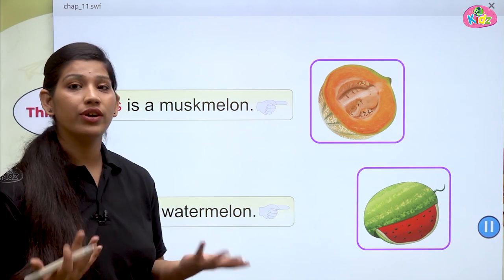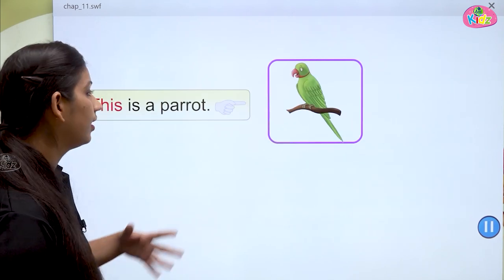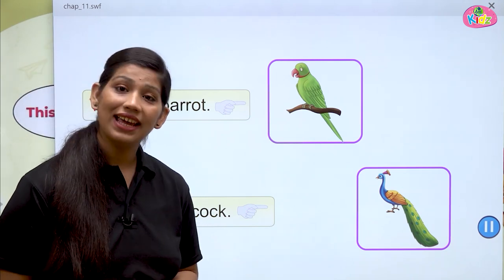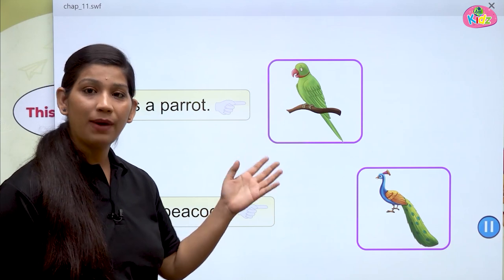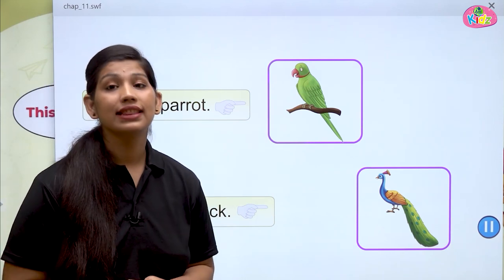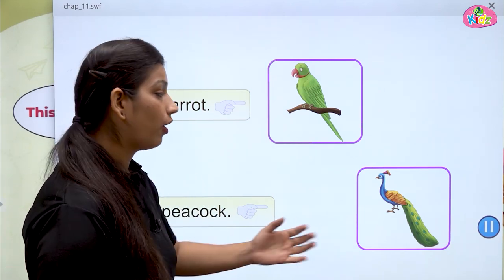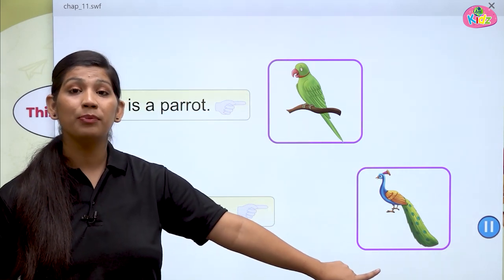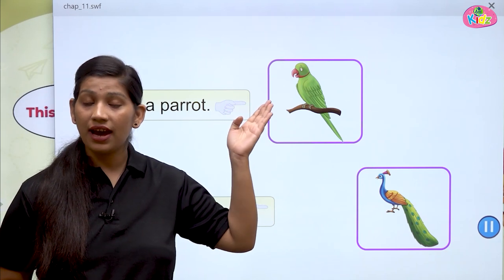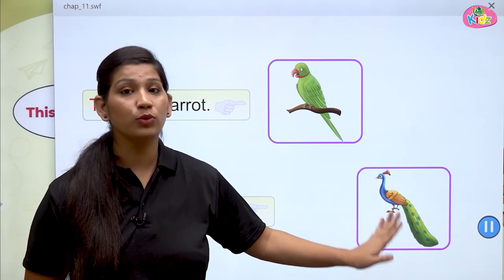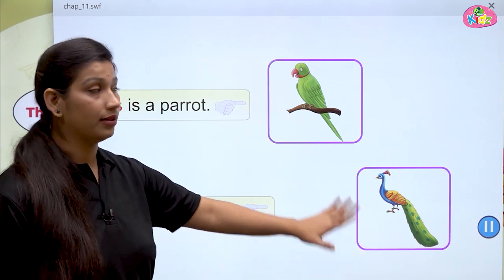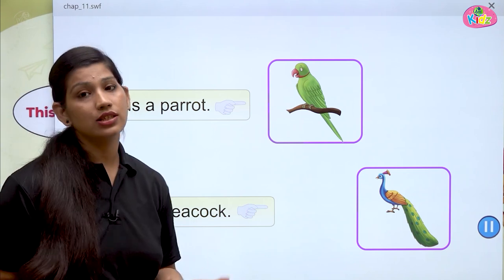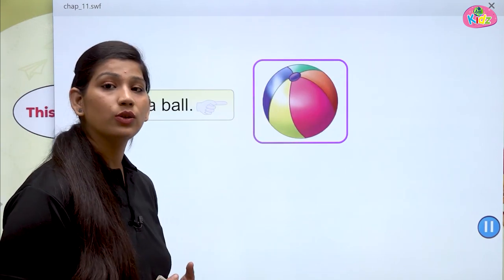Let us move forward and see more examples. Here you can see a picture of parrot and a picture of peacock. Parrot paas hai, toh hum bolenge: this is a parrot. Aur peacock door hai, toh hum bolenge: that is a peacock. Peacock jab door hoga toh that, parrot paas hai toh this. Koi bhi cheez agar paas hai toh woh this hoti hai, door hoti hai toh woh that hoti hai.